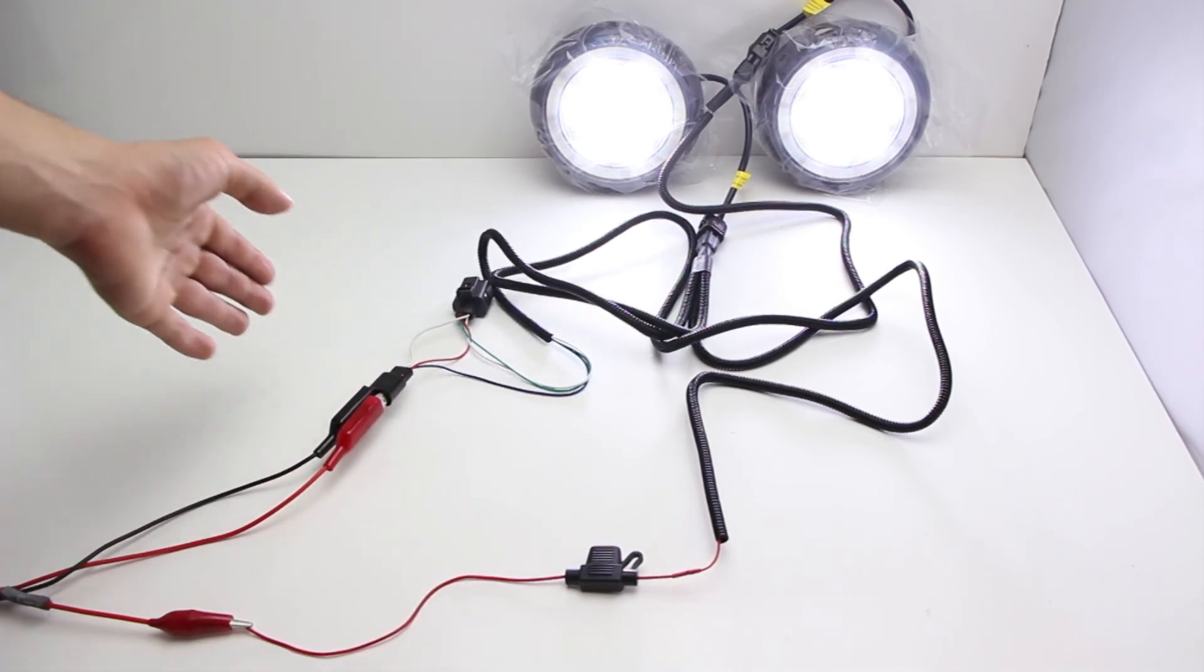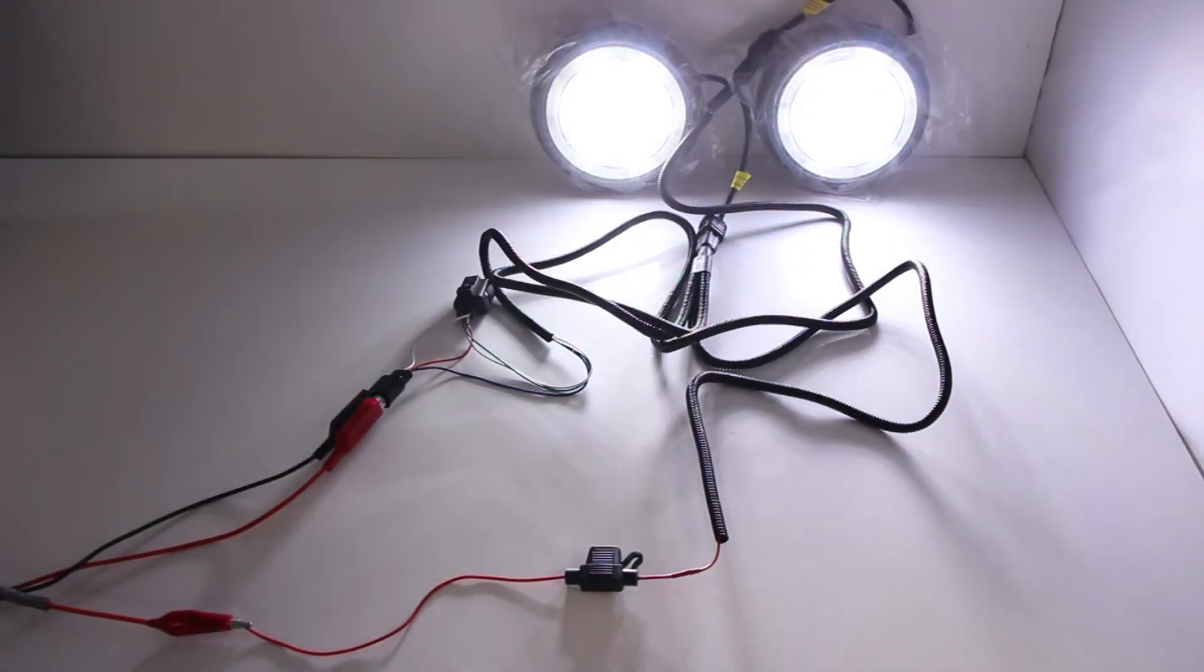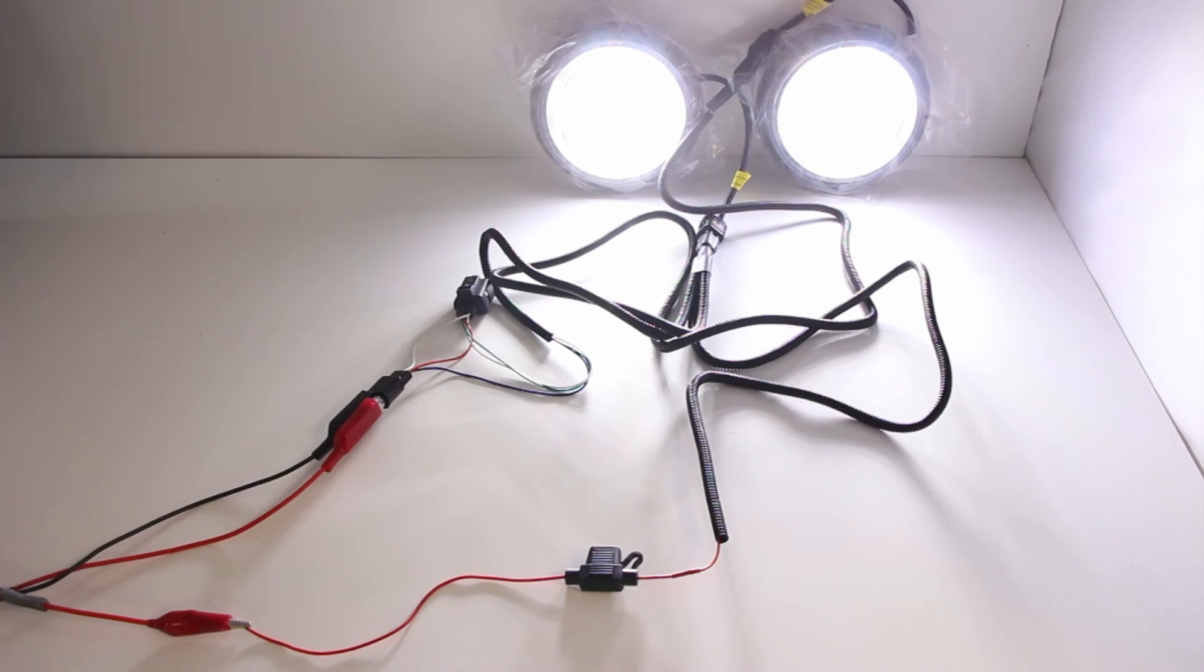When you turn on your headlights the parking lights will turn on which will then trigger the inner rally lights and turn off the halo ring portion. Turning off your headlights will disable the inner rally lights and the halo ring portion will light up again.